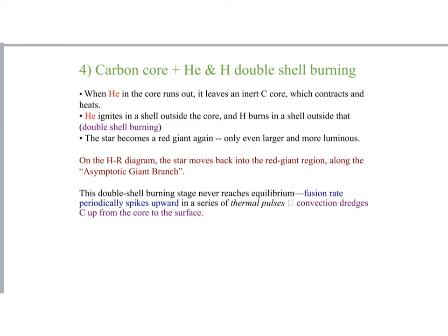Here's what happens next. The helium is burning in a core, but at some point the core is going to be completely converted into carbon. So we end up with an inert carbon core, and then we have hydrogen and helium burning in a double shell — a shell of helium still burning into carbon, and then another shell of hydrogen going into helium.